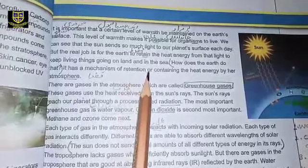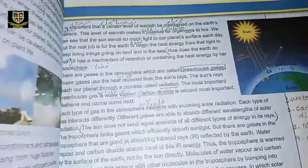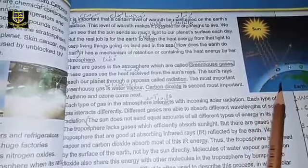The Earth has a mechanism for retaining and containing the heat energy by its atmosphere. The Earth does this work through its atmosphere. In the atmospheric layers — the stratosphere — the ozone layer blocks ultraviolet rays so that harmful rays do not reach the Earth. It blocks out the sun's most intense rays, normalizes them, and then allows them through to our Earth.